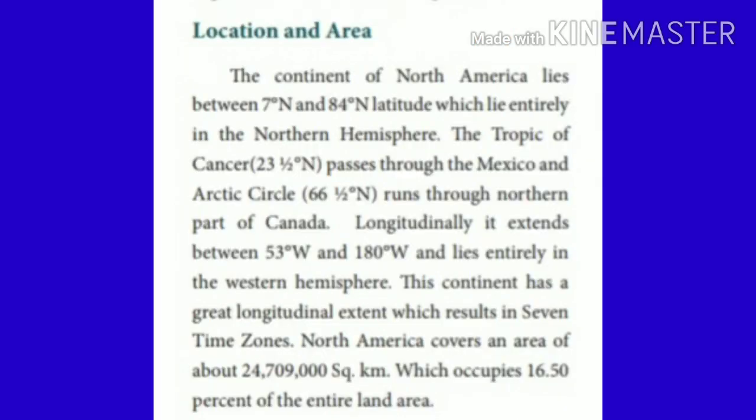Now we are going to see the location and area of North America. The continent of North America lies between 7 degrees north and 84 degrees north latitude, which lies entirely in the northern hemisphere. The Tropic of Cancer at 23.5 degrees north passes through Mexico, and the Arctic Circle at 66.5 degrees north runs through the northern part of Canada. Longitudinally, it extends between 53 degrees west and 180 degrees west, lying entirely in the western hemisphere. This continent has a great longitudinal extent which results in 7 time zones. North America covers an area of about 24,709 square kilometres, which occupies 16.50% of the entire land mass.